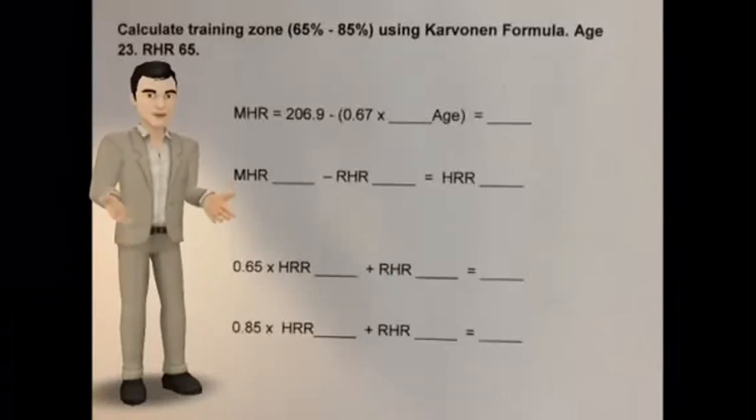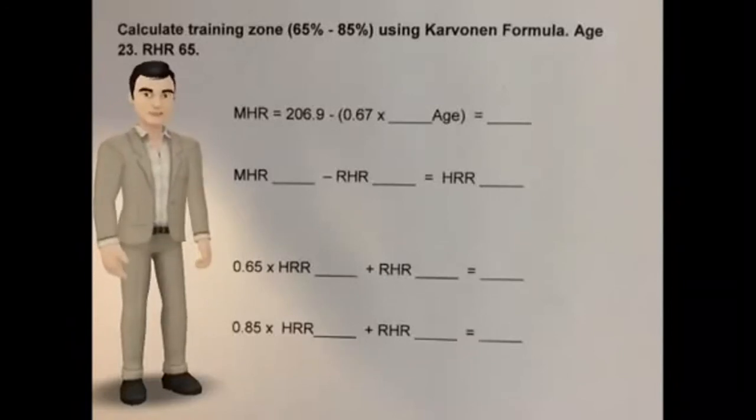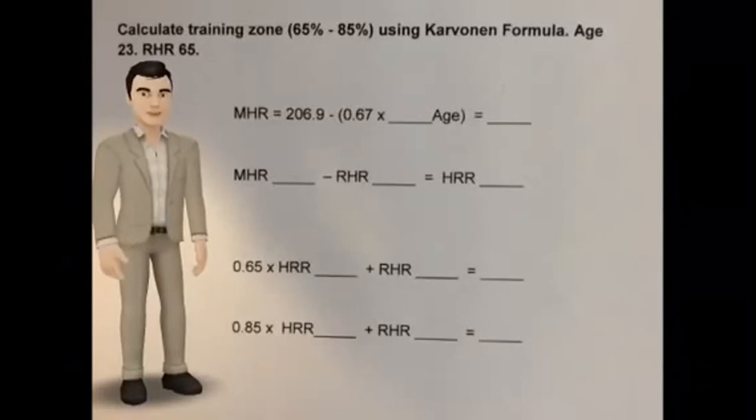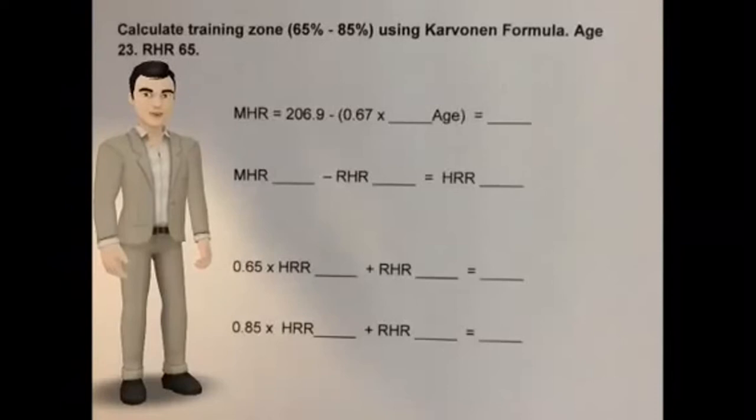The Karvonen formula helps you to determine your target heart rate zone. A 23-year-old client with resting heart rate of 65 beats per minute wishes to train between 65 and 85%. Calculate the target heart rate for this person.